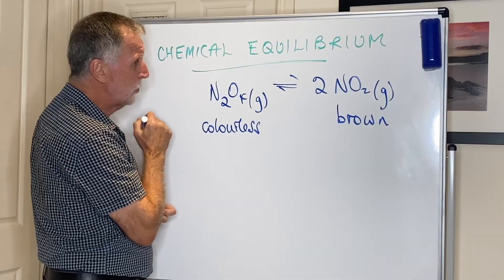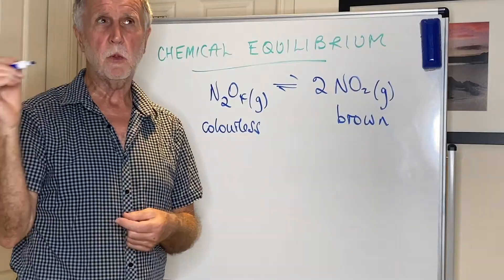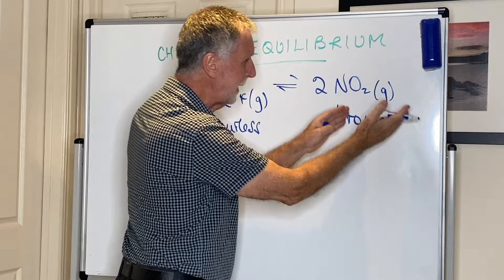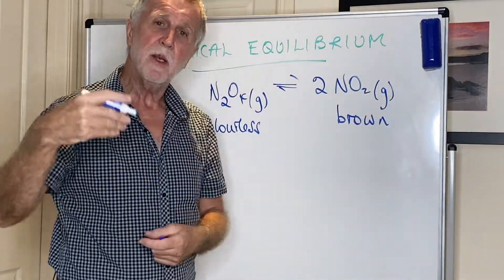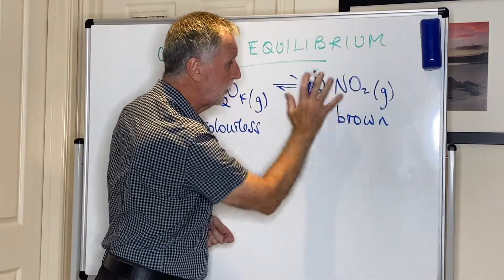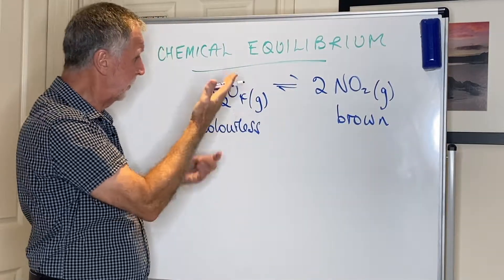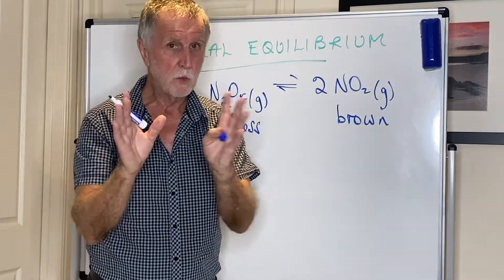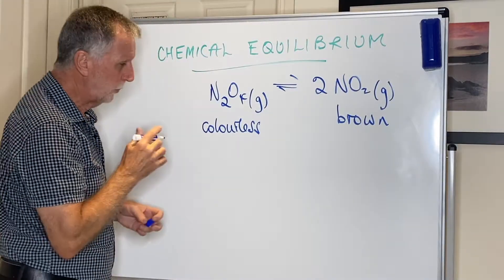What would happen if I took some NO2 away? Le Chatelier says the system will oppose you, try to put it back, and will therefore shift to the right again. In terms of collision theory, if I take some NO2 away there are fewer collisions per second between those molecules, which slows down the back reaction, meaning the forward reaction is relatively faster — and again it shifts to the right.